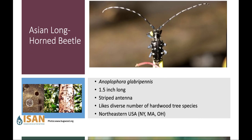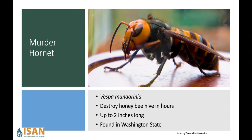Next, the murder hornet was only recently found in the United States and so far only in Washington state. While you wouldn't want to be stung by this bug, it's really only a big concern for honeybees — it can go in and destroy a honeybee hive very quickly in just a few hours. This pest is quite large, about two inches long, so it's really something you're not going to miss, which is why it's also called the giant murder hornet.